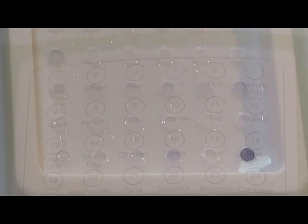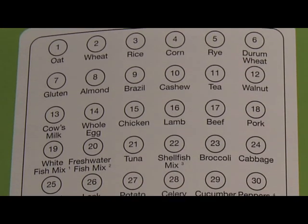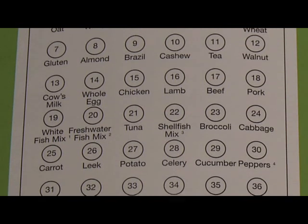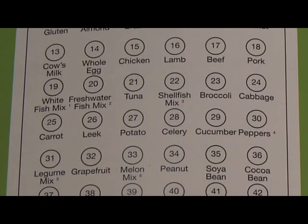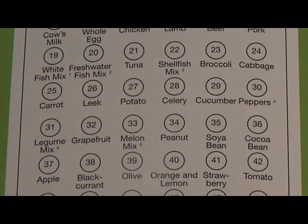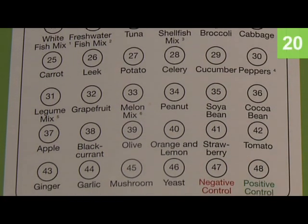Foods are located in positions 1 to 46 on the reaction tray. Identify which positions have produced a blue spot and refer to the test report in the kit instructions to identify the food responsible. Circle the foods that have produced a blue dot.